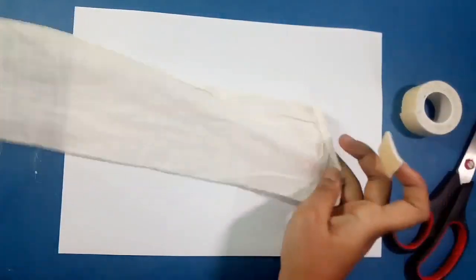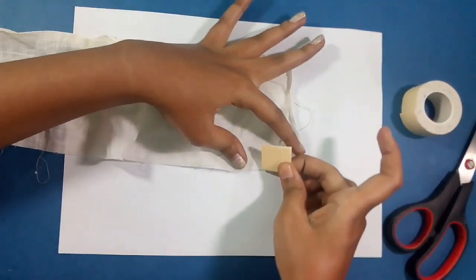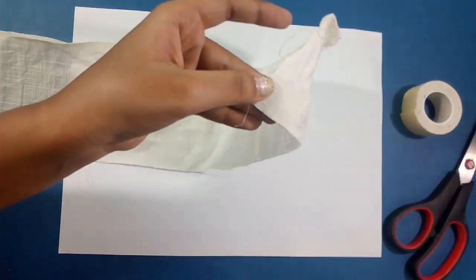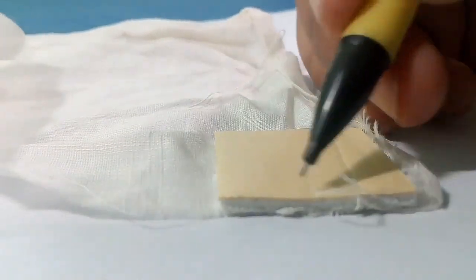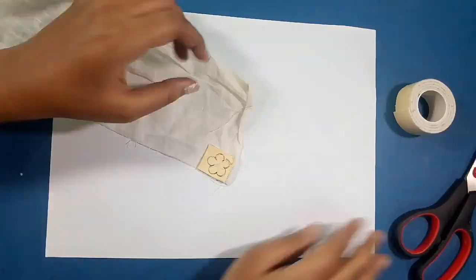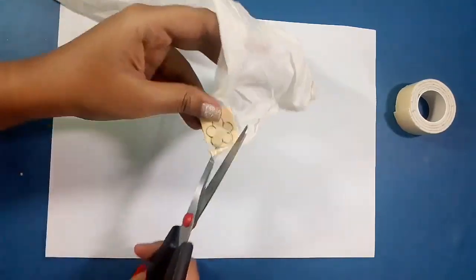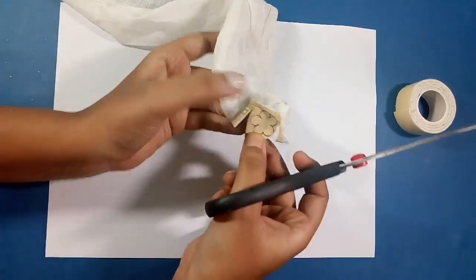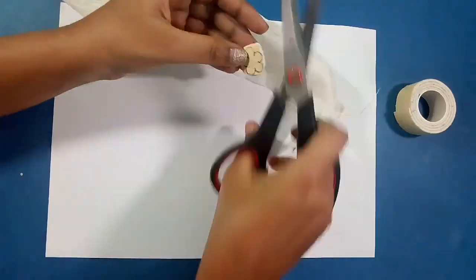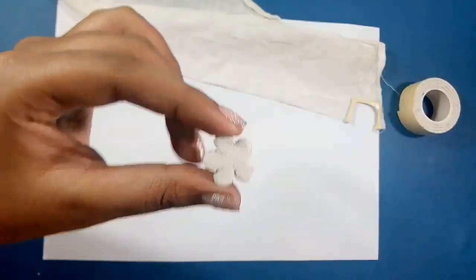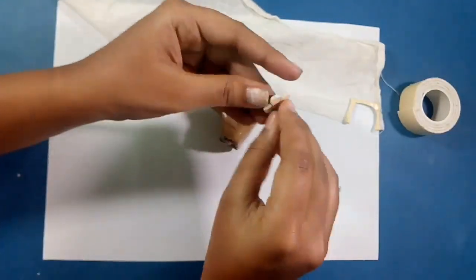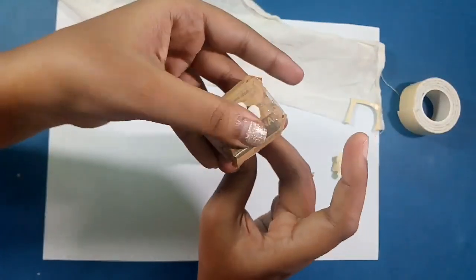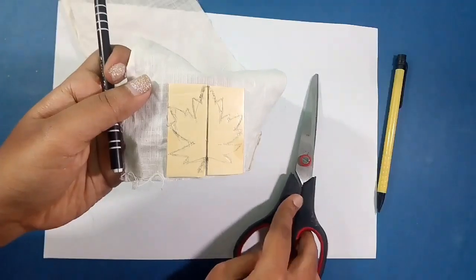To make a stamp, take a double sided tape and stick it to a piece of cloth. Stick this shape to the handle that we had made using newspaper and done. Our stamp is ready to use.